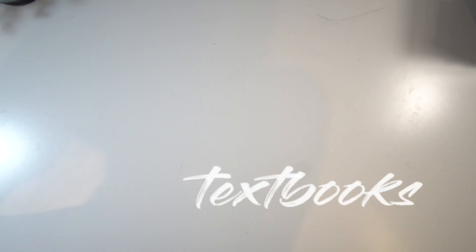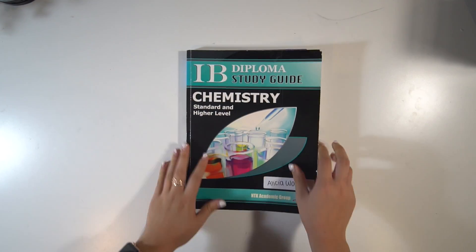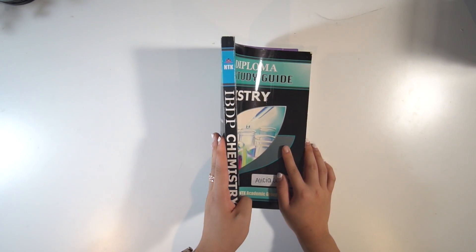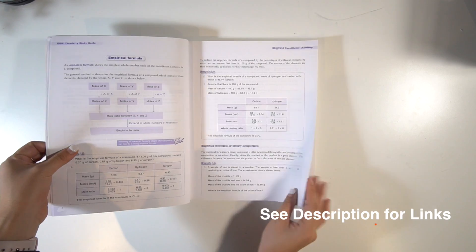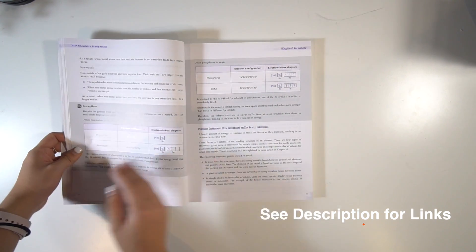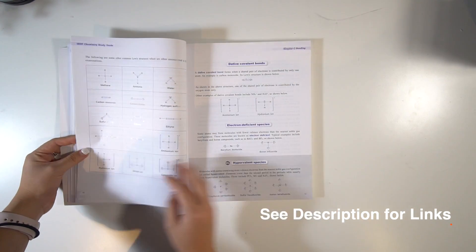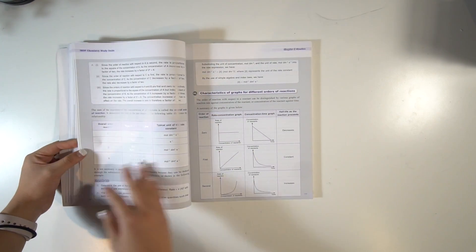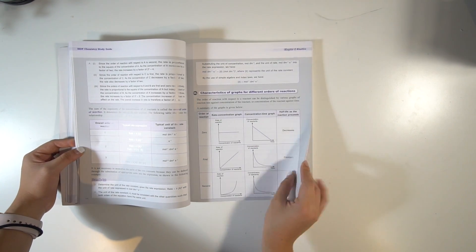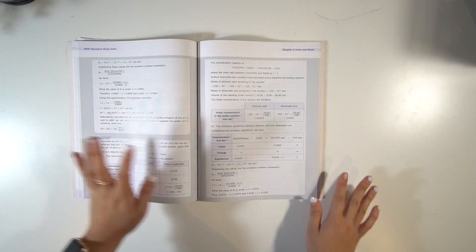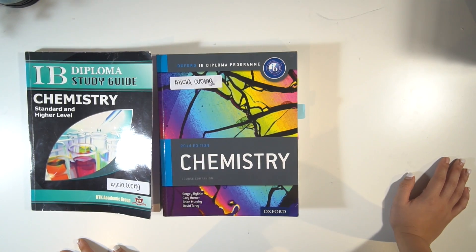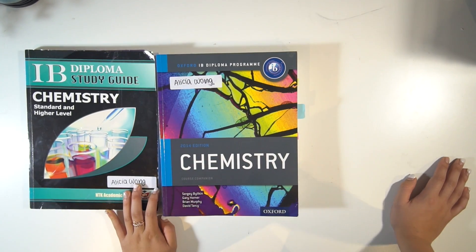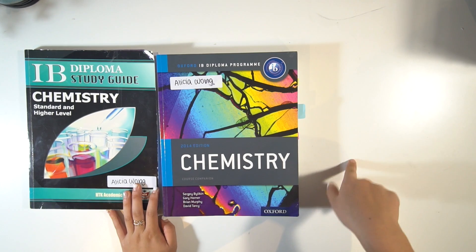The second category is textbooks. For the IB, the textbook I really liked was the NTK Chemistry — it's a blue textbook. This was my favorite just because everything was really concise and explained things simply. However, it's not updated to the most recent syllabus, so you have to be aware of what's still included at certain levels.